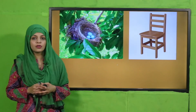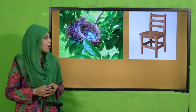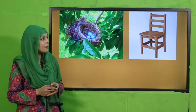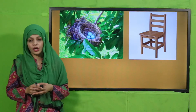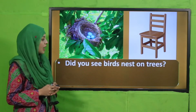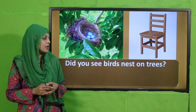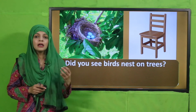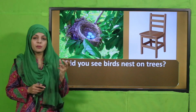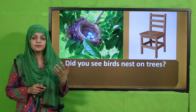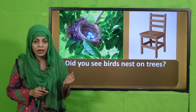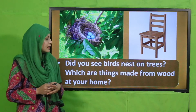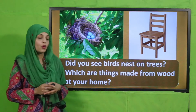Now it's time for an activity. Here you can see some pictures on your screen — look at them very carefully. On one side you can see a nest with eggs, and the other picture is of a chair. Have you ever seen birds' nests on trees? Trees pe nest, where birds live — you must have seen them. Now tell me which things are made from wood at your home.